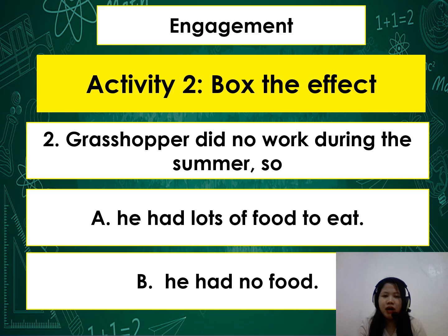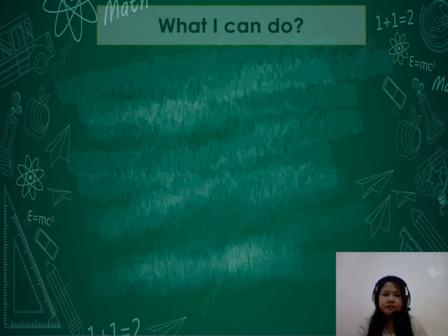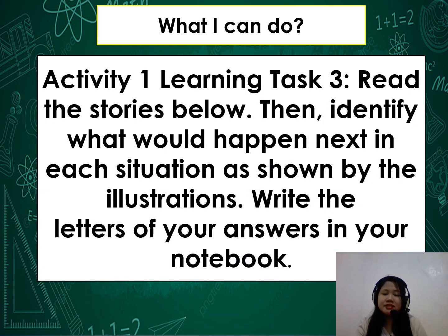The correct answer for number 2 is letter B — he had no food. For Activity 1, Learning Task 3: read the stories below, then identify what would happen next in each situation as shown by the illustrations. Write the letter of your answer in your notebook.